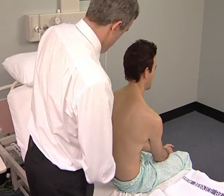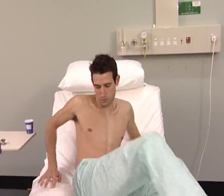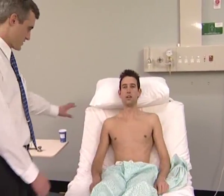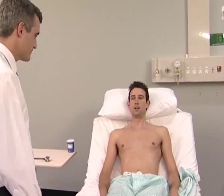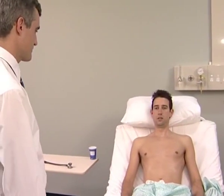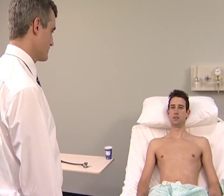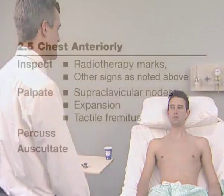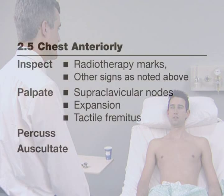Now get the patient back in bed. The examiner moves around to the front of the chest and stands back to make a general inspection for scars and for the small tattoos used as markers for radiotherapy fields. The skin may appear erythematous if the area has received a course of radiotherapy. The supraclavicular nodes are examined here if this has not been done from behind.